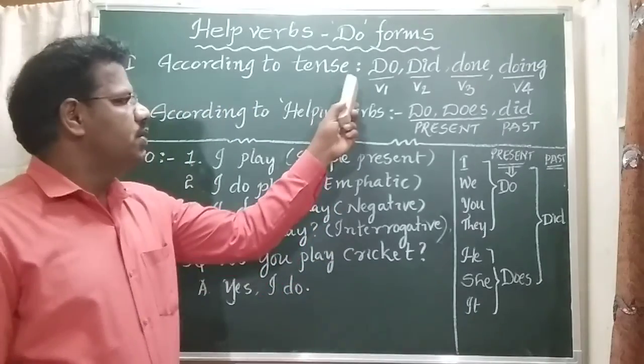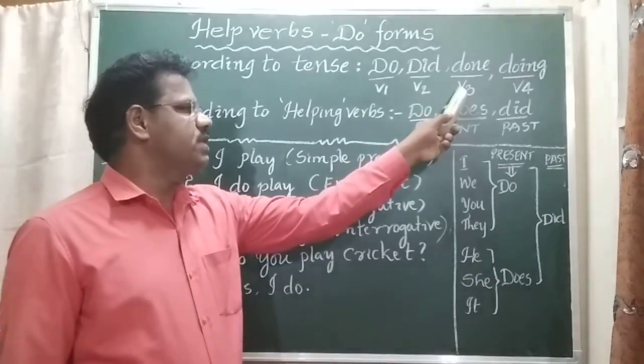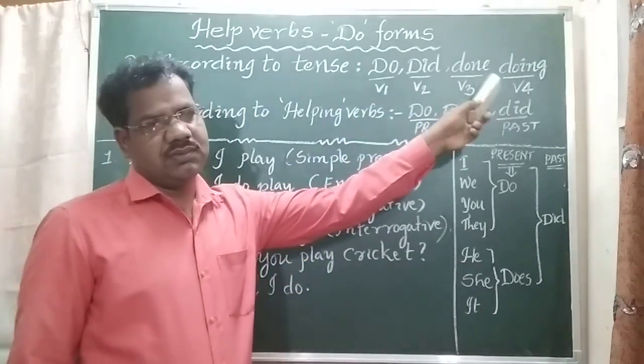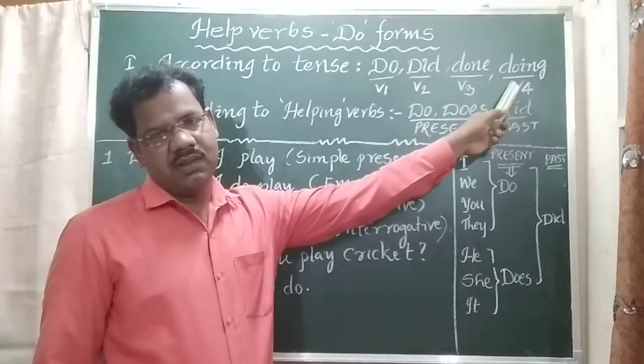What are those? Do Forms are Do, Did, Done, Doing. That means Form 1, Form 2, Form 3, Form 4. That means Present, Past, Past Participle, Present Participle.